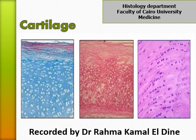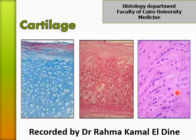Dear students, this is a practical session talking about cartilage. Cartilage is a type of connective tissue in which the matrix is firm or rubbery. We have three types of cartilage: hyaline cartilage, yellow elastic cartilage, and white fibrocartilage. Hyaline means glossy or translucent. The yellow elastic cartilage contains elastic fibers, and the white fibrocartilage contains collagen fiber type one.